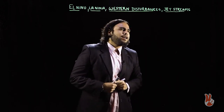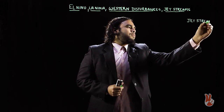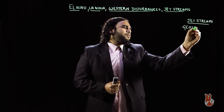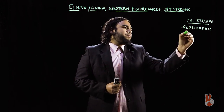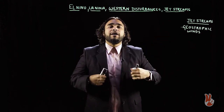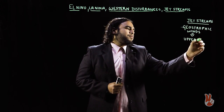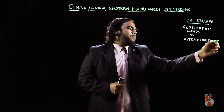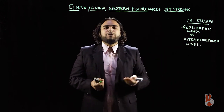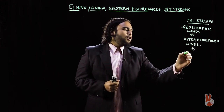Jet streams are nothing but geostrophic winds. Geostrophic winds are nothing but upper atmospheric winds, or to be more precise, upper tropospheric winds. Since these winds are upper tropospheric winds, they are beyond the control of friction — there is no effect of friction.